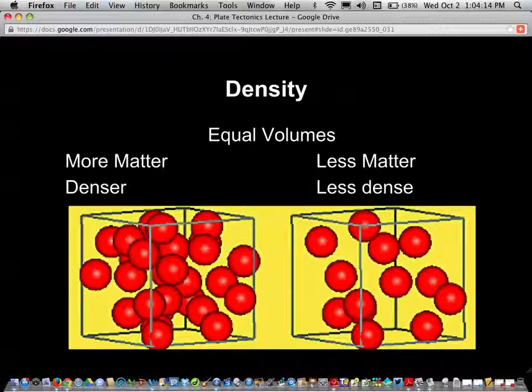If there's more matter, that is more molecules - if there's more molecules in the cube on the left, then that cube is denser than the cube on the right, which has fewer molecules, fewer amount of matter in that cube on the right.